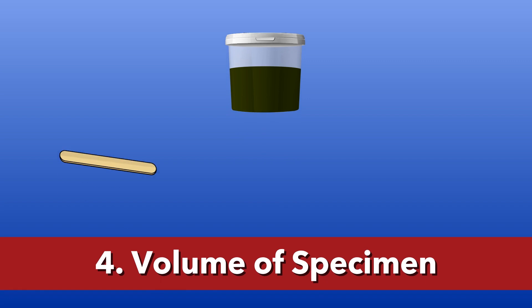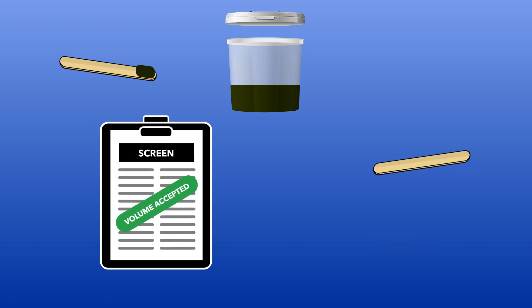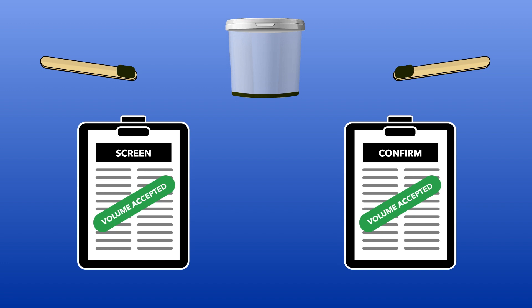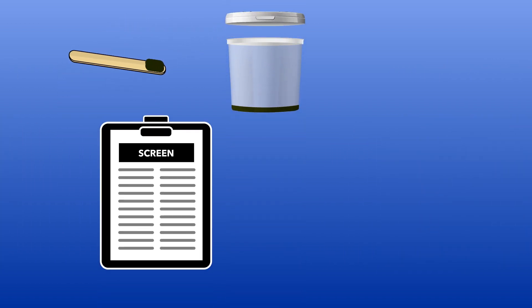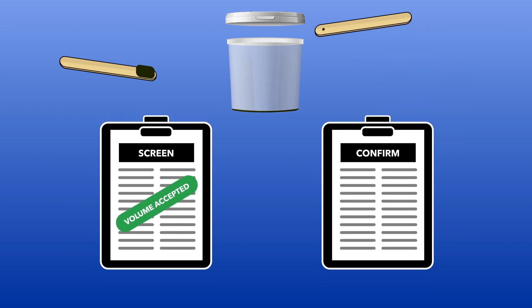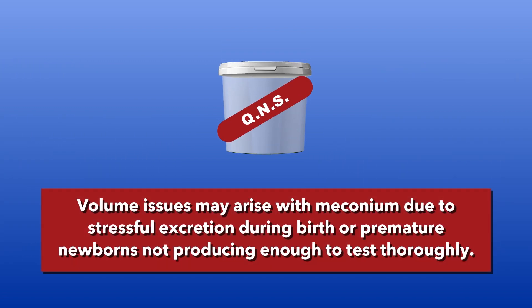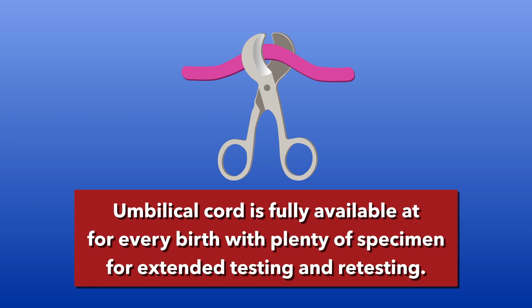Volume of specimen. The volume of specimen determines the amount of drugs and drug metabolites that can be screened and confirmed at the laboratory. USDTL confirms all positive results. If the lab doesn't have enough specimen to test all of the panels ordered, it is considered quantity not sufficient, or QNS. Volume issues may arise with meconium due to stressful excretion during birth or premature newborns not producing enough to test thoroughly. Umbilical cord, on the other hand, is fully available at every birth with plenty of specimen for extended testing and retesting.